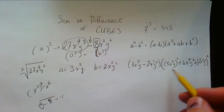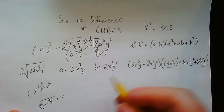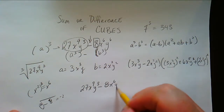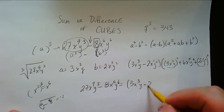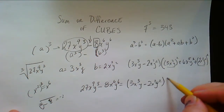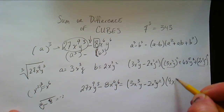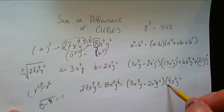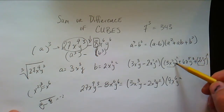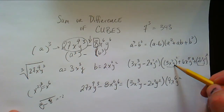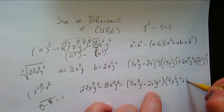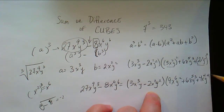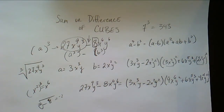All we gotta do now to simplify is square those remaining terms and we're done. So 27x to the ninth y cubed minus 8x to the sixth y to the sixth equals — let's see — 9x to the sixth y squared: when you square 3 you get 9, when you square x cubed you get x to the sixth, when you square y you get y squared. The middle part stays the same. And the last part: 2 squared is 4, so it's 4x to the fourth y to the fourth. And we're done — boom, fancy schmancy.